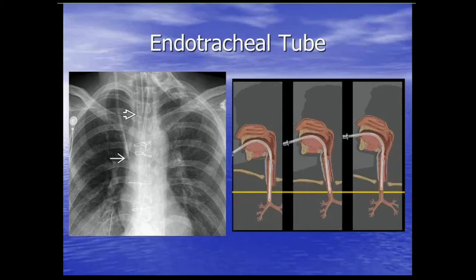For endotracheal tubes in adults, I like to see the tip between three and eight centimeters above the carina. For pediatric patients, the main goal is mid-tracheal level. Neck position changes ET tube position: flexion moves it too low toward the carina, neutral is correct, and extension pulls it back. The main concern is you don't want it at the carina or in the right main stem bronchus — it tends to go down the right main stem bronchus because it's straighter, which is also why patients tend to aspirate more on the right side.